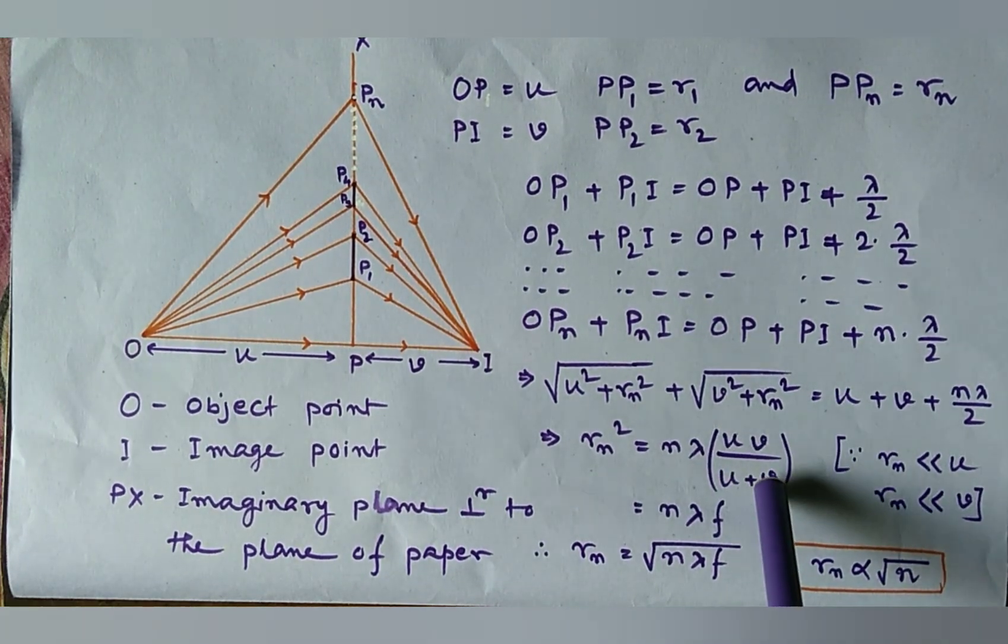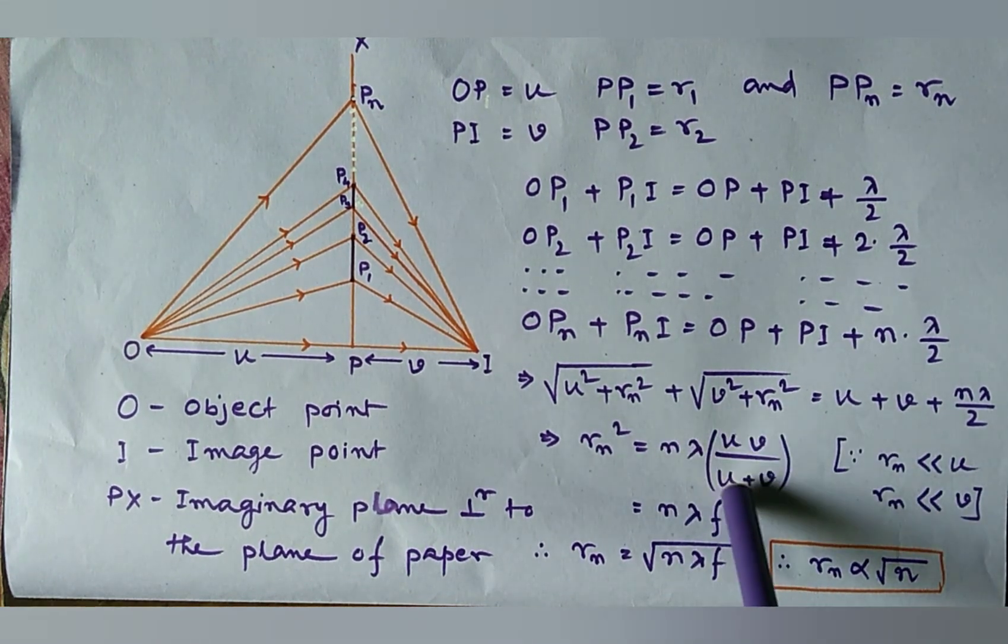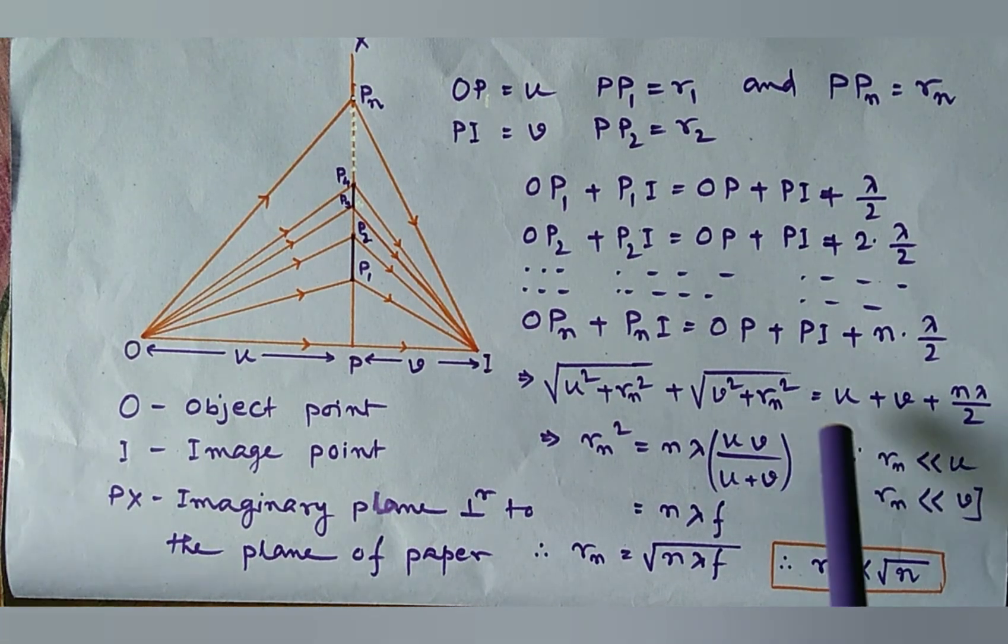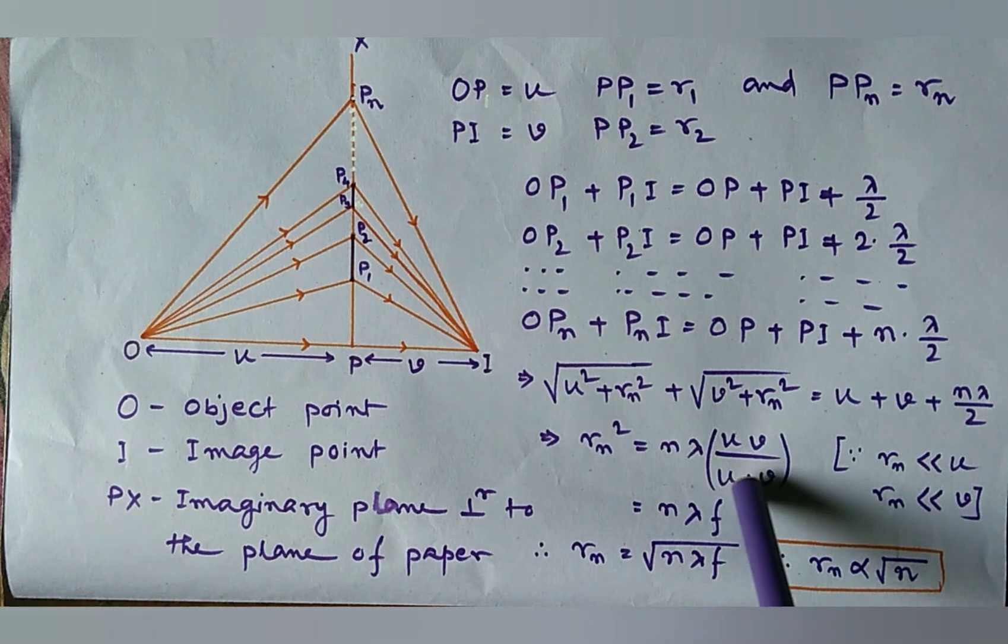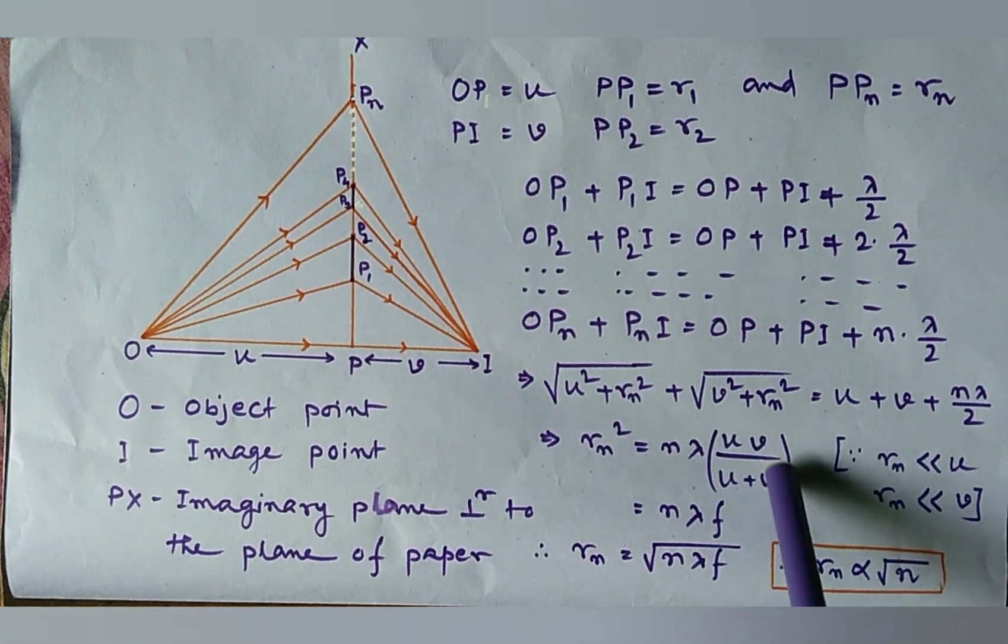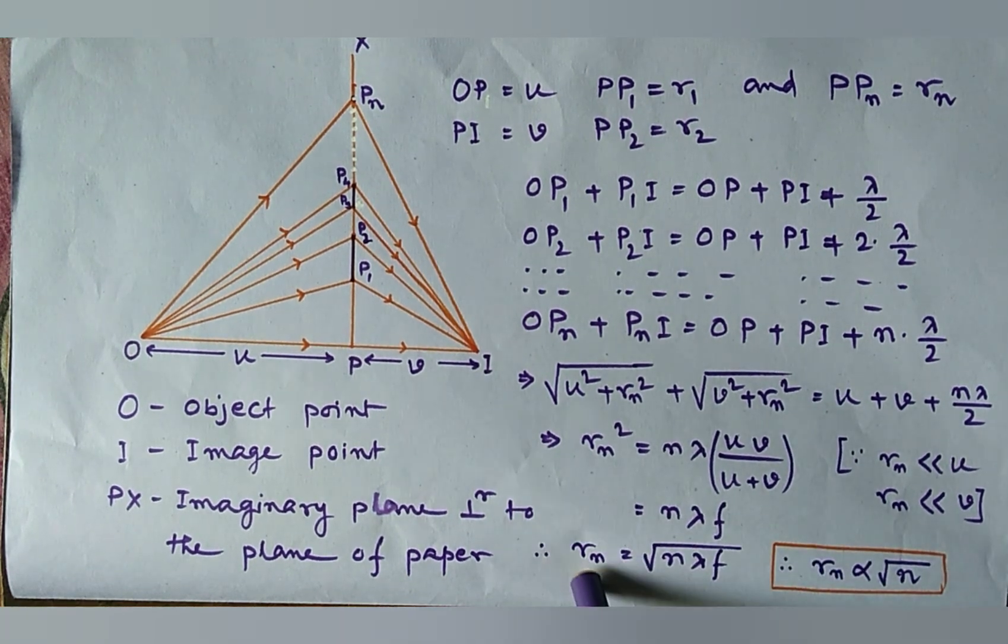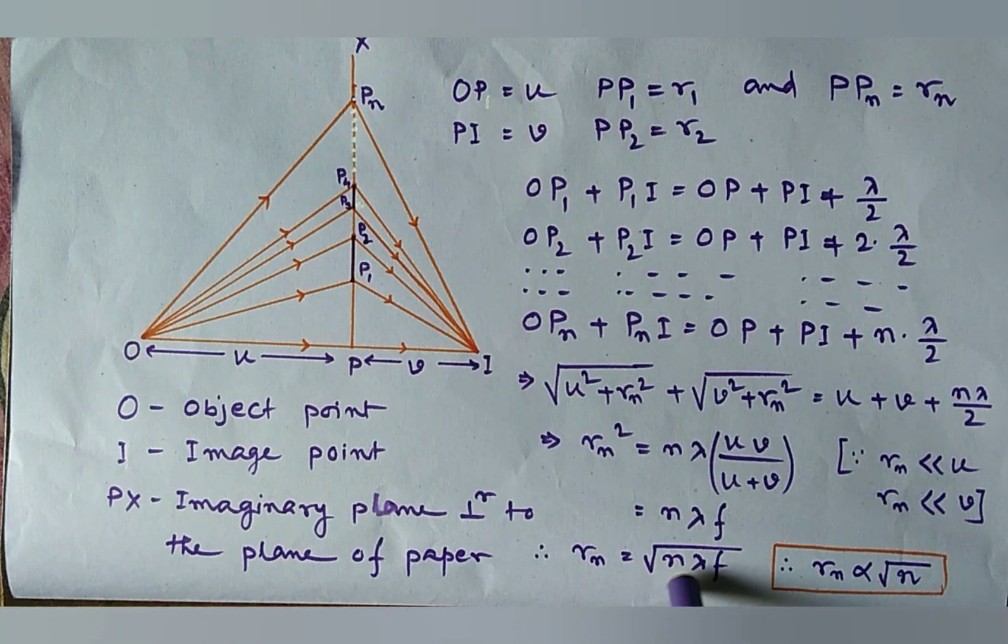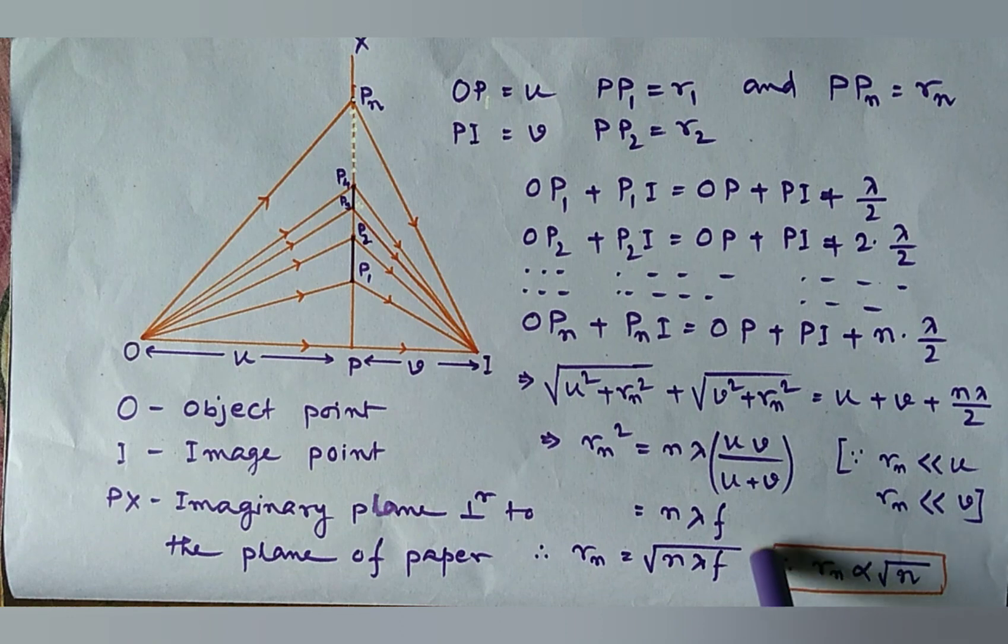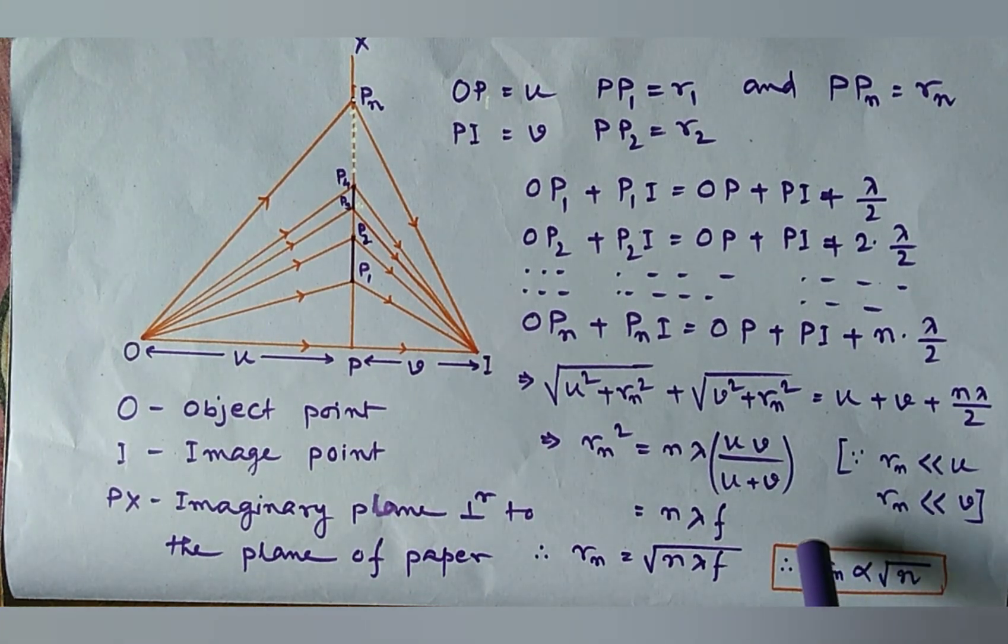Now, if you remind from the previous classes that this is the focal length of a converging lens. So, we may write this as Rn square equal to N lambda F or Rn equal to root over N lambda F that means Rn proportional to root N which is the radius of the zone plate.